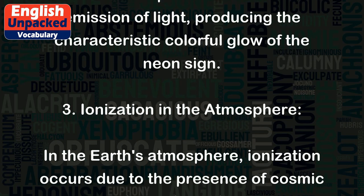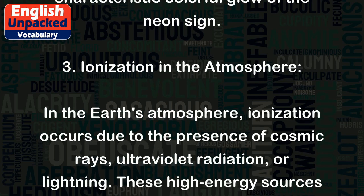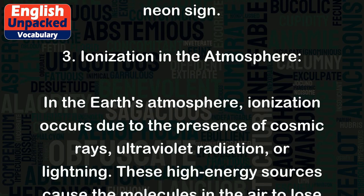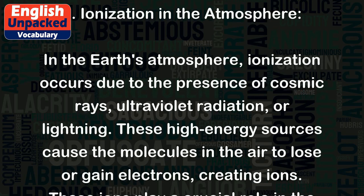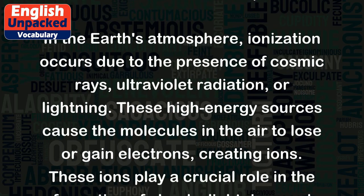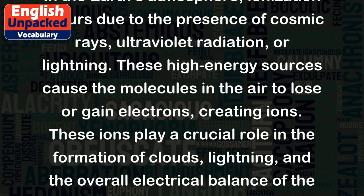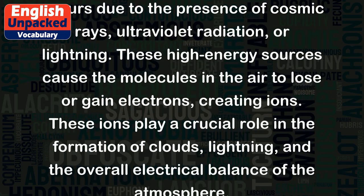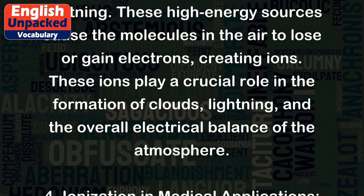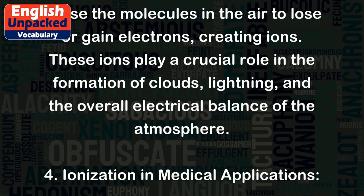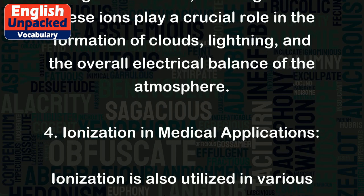Example 3: Ionization in the atmosphere. In the Earth's atmosphere, ionization occurs due to the presence of cosmic rays, ultraviolet radiation, or lightning. These high-energy sources cause the molecules in the air to lose or gain electrons, creating ions. These ions play a crucial role in the formation of clouds, lightning, and the overall electrical balance of the atmosphere.